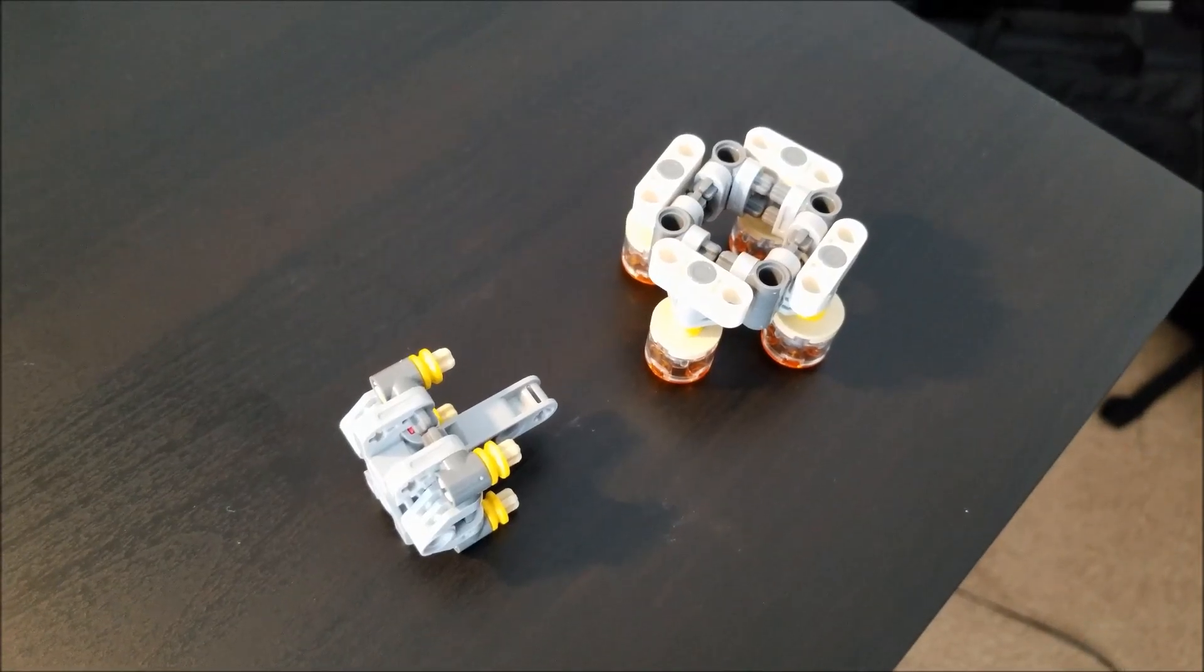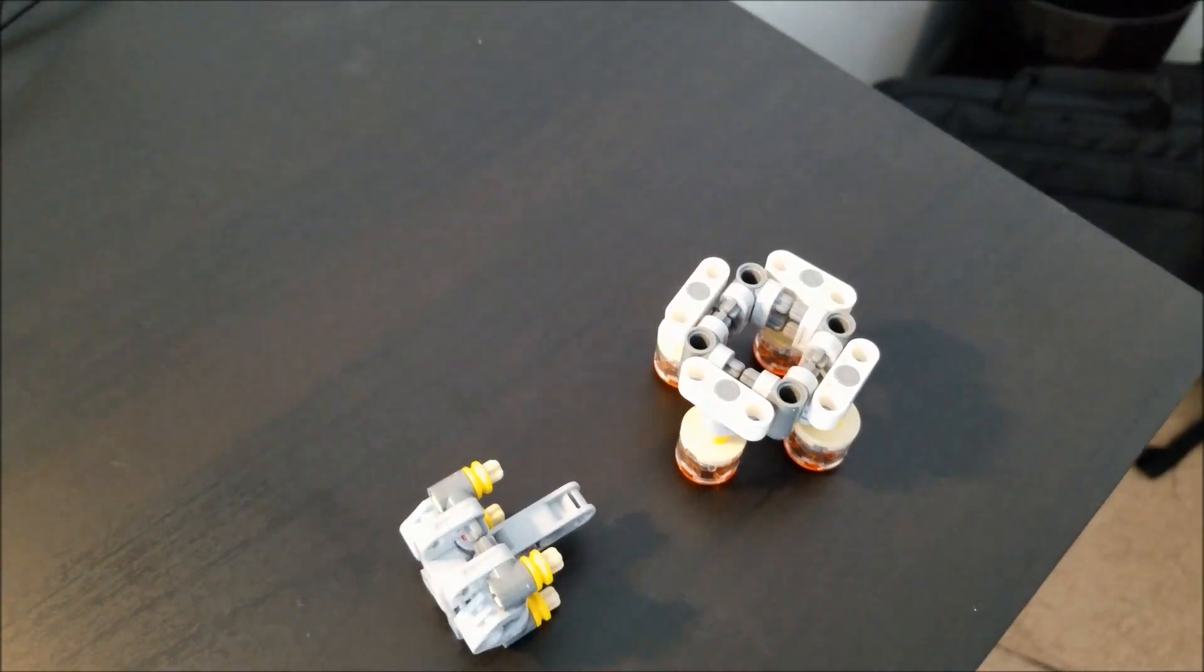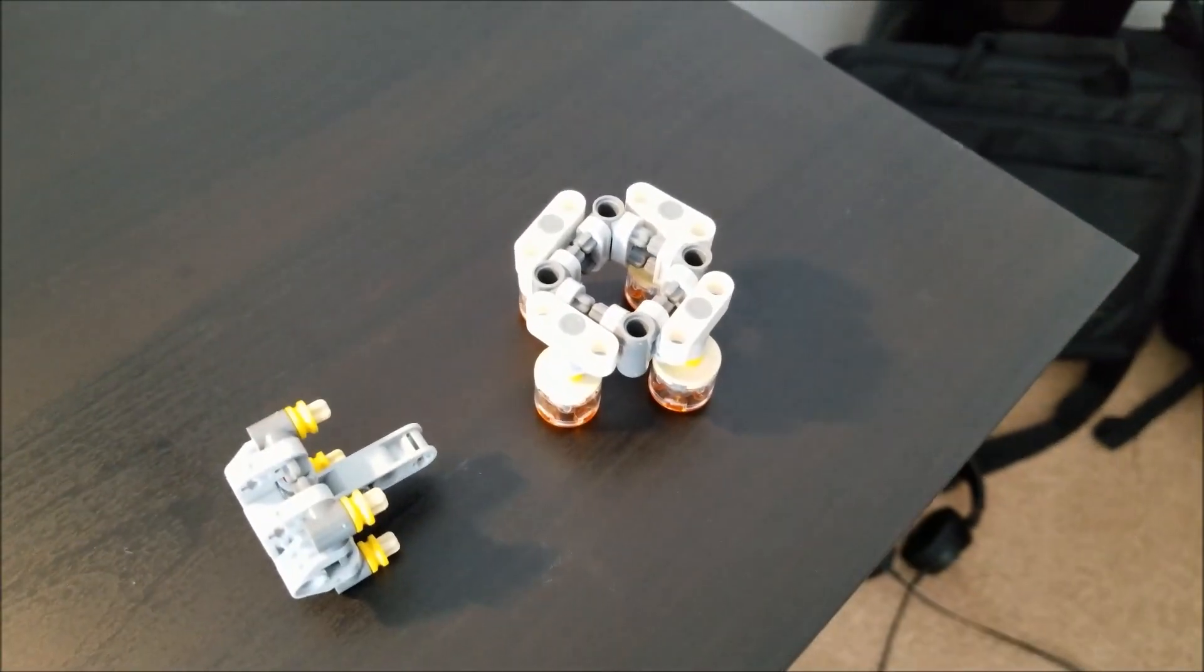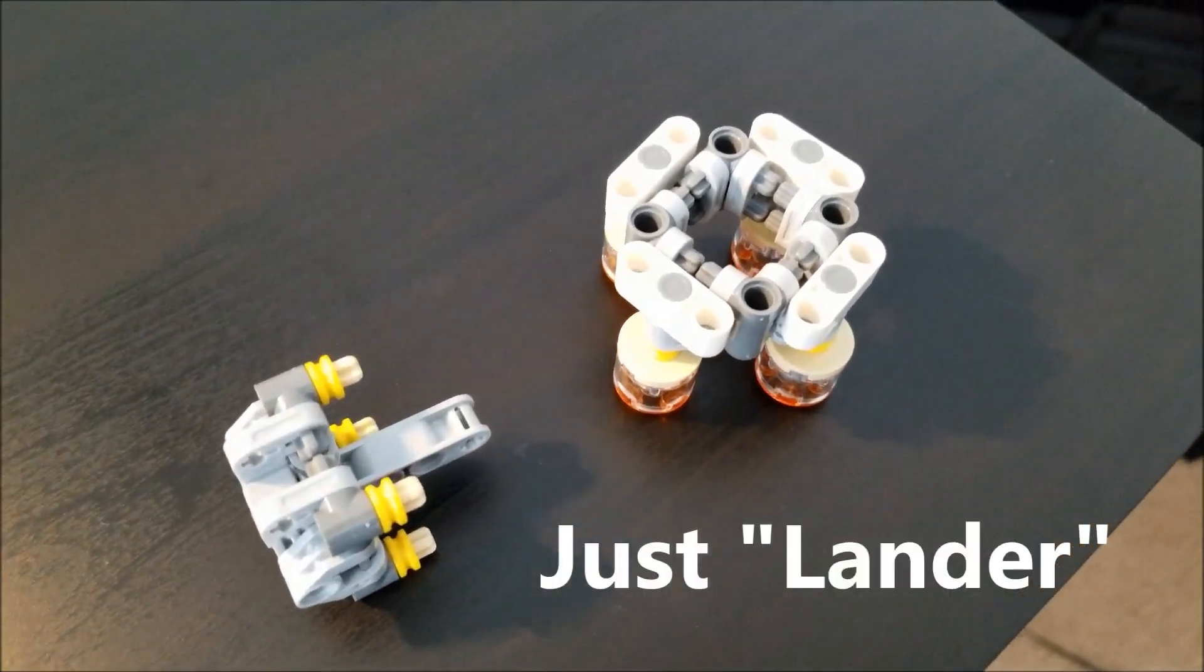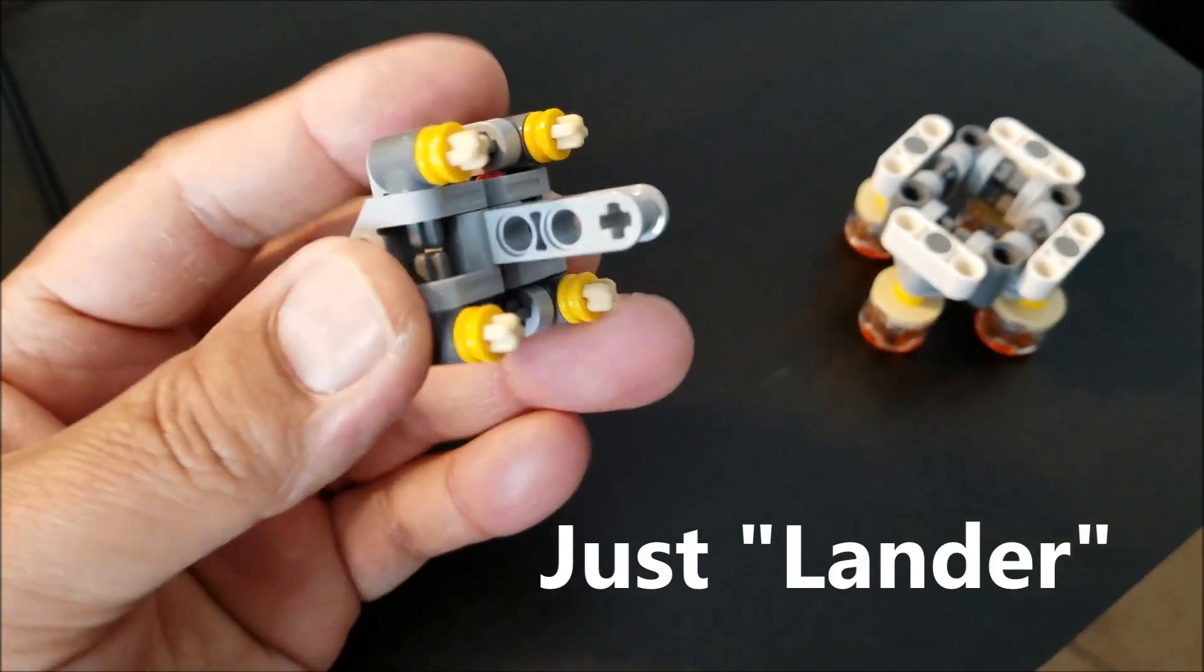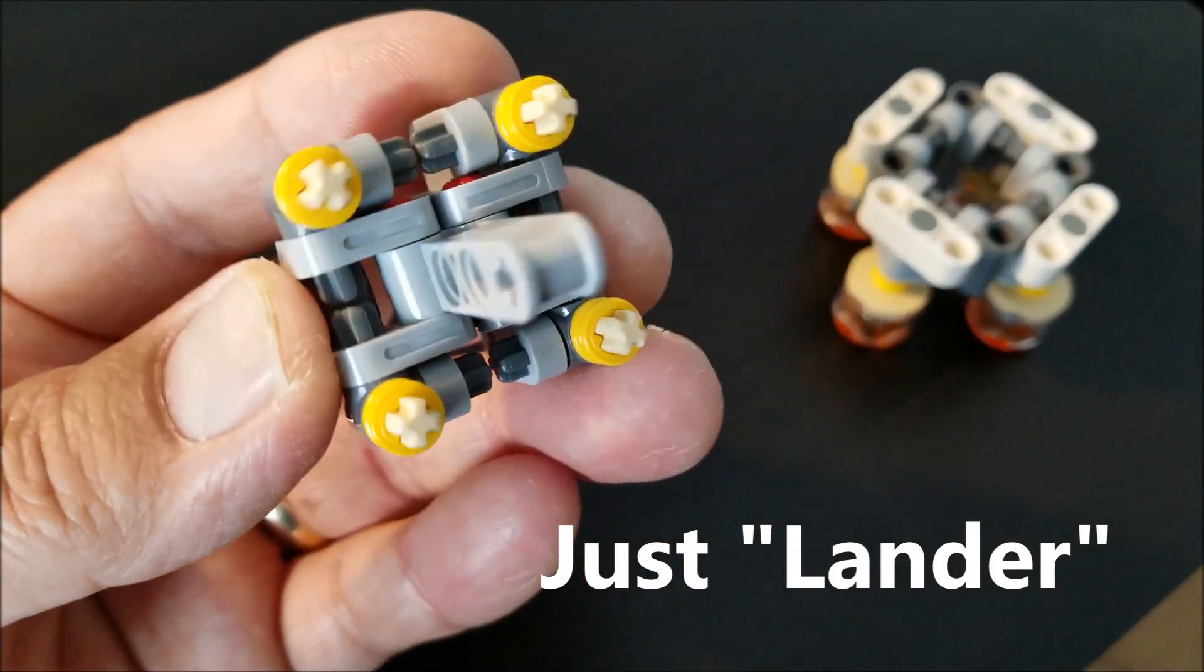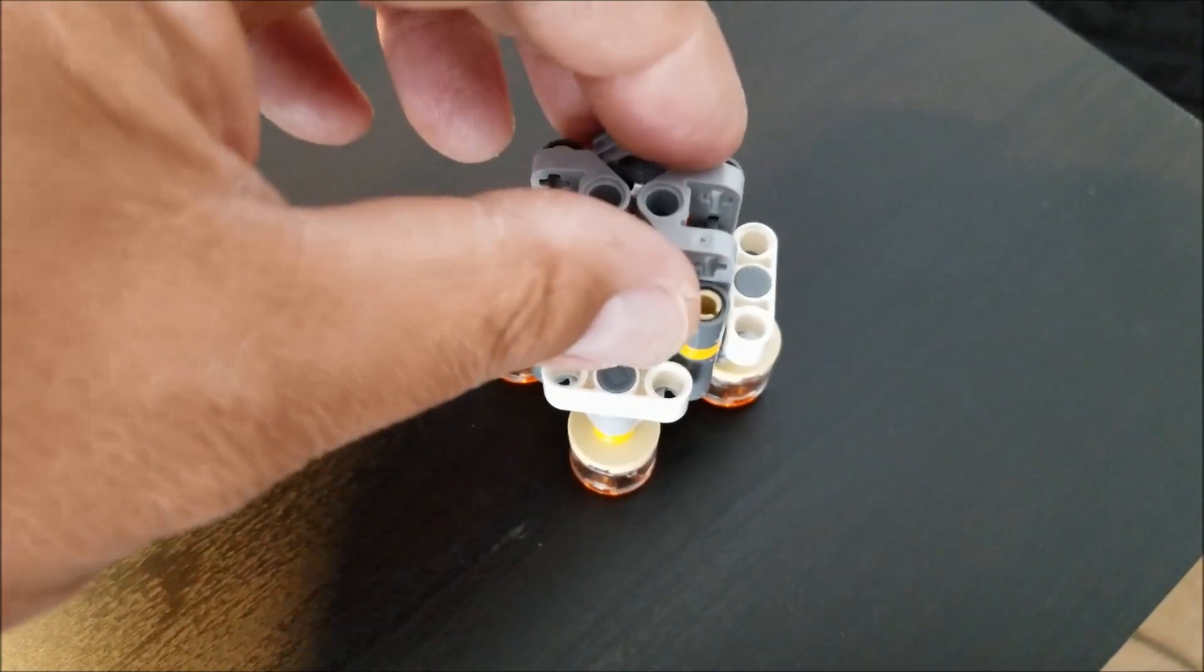So check this out. I just hope this is not one of those things where I end up looking like a total doofus, but it's with the lunar lander. I'm having an issue here. It's saying that this is supposed to go into those four holes. The only problem is it doesn't stick.